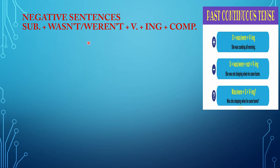Now we come to the negative sentences in the past continuous. The subject first, followed by one of verb to be — wasn't or weren't (was not / were not) — plus the verb with -ing added and the complement.